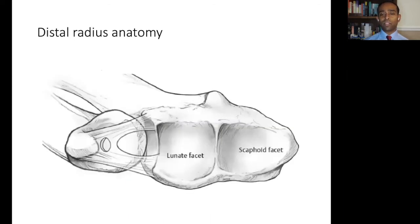This is a view of the articular surface of the radius, with the dorsum of the wrist at the top of the picture. The lunate and scaphoid facets can be seen, specifically shaped to match their corresponding carpal bones.